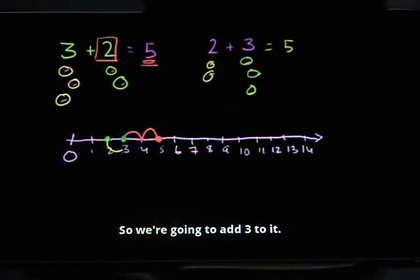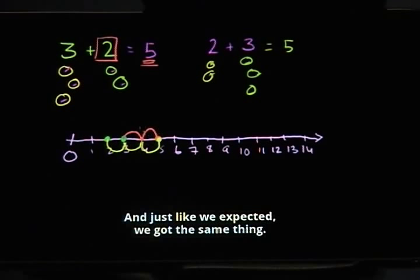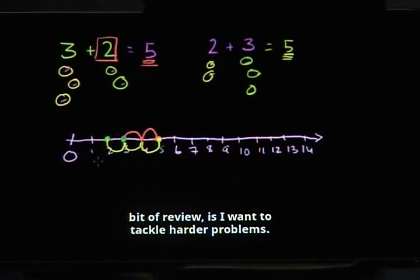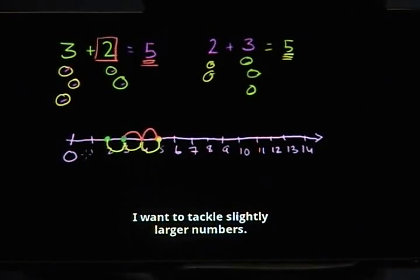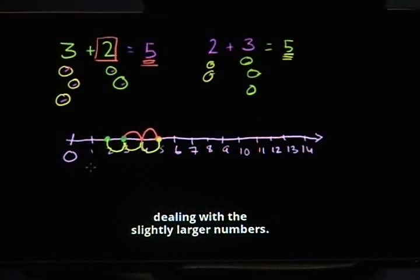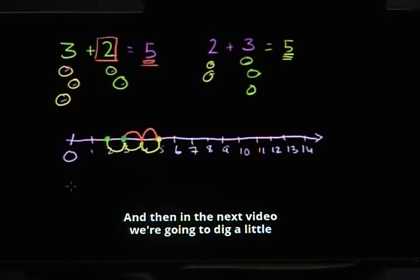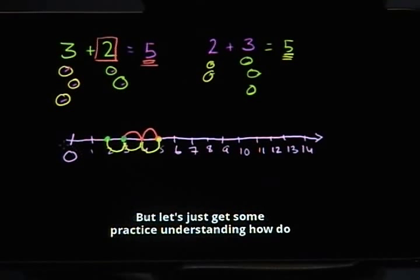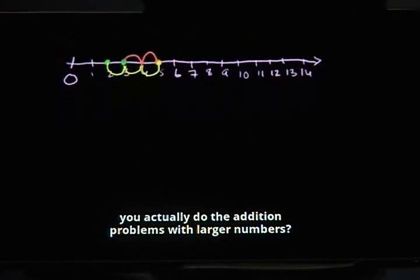So we're going to add 3 to it: 1, 2, 3. And just like we expected, we got the same thing — we got 5 again. Now what I want to do in this video, and hopefully this was just a bit of review, is I want to tackle harder problems, slightly larger numbers. And in the next video we're going to dig a little deeper and think about what numbers even mean. But let's just get some practice understanding how to do addition problems with larger numbers.